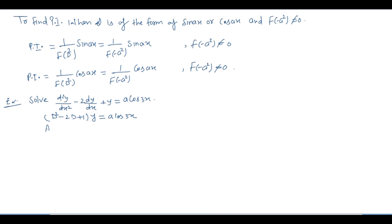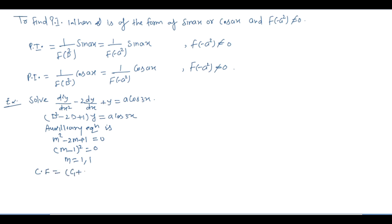Auxiliary equation होगी: m² − 2m + 1 = 0, यानि कि (m − 1)² = 0. Roots: m = 1, 1. तो Complementary Function (CF) होगा: (c₁ + c₂x)eˣ.